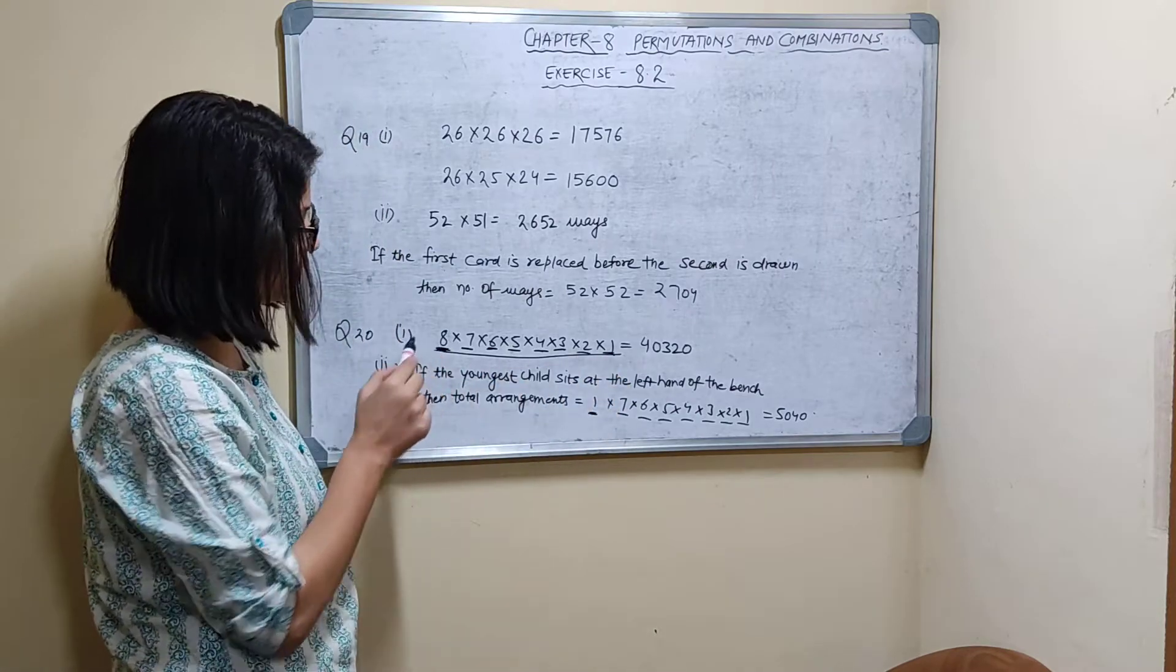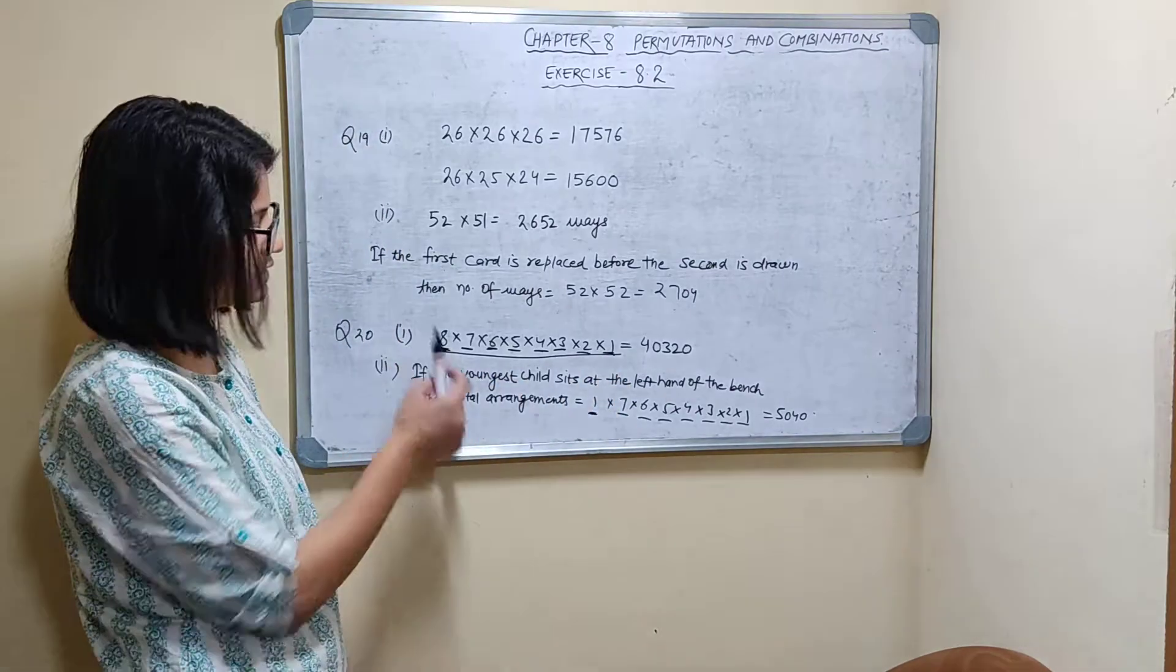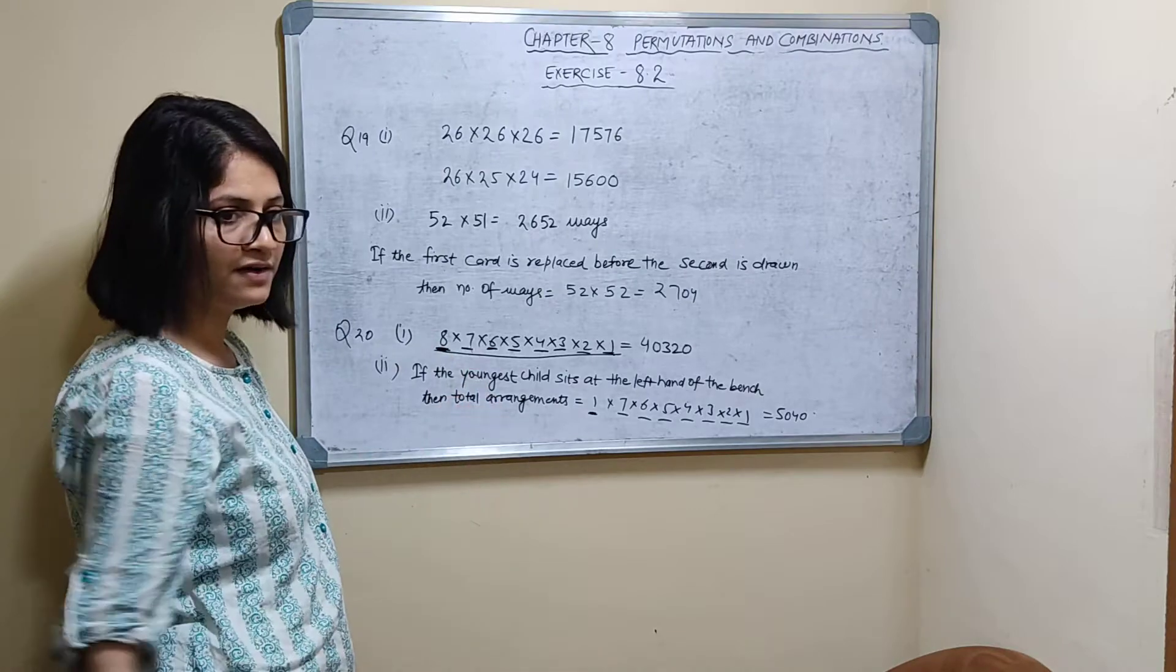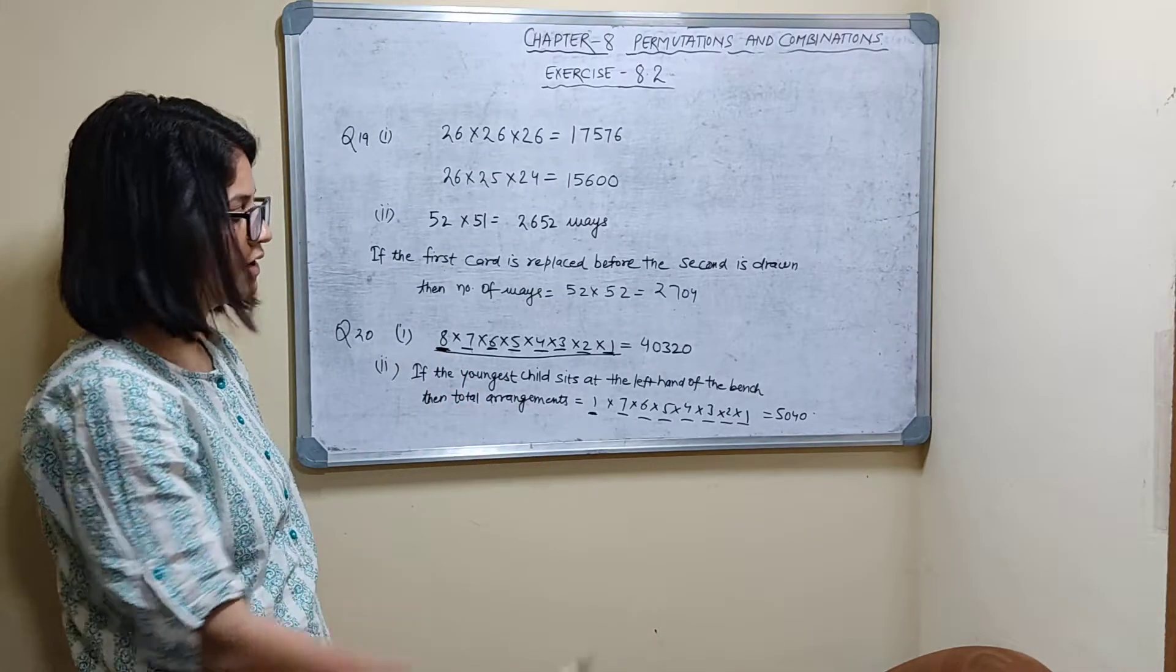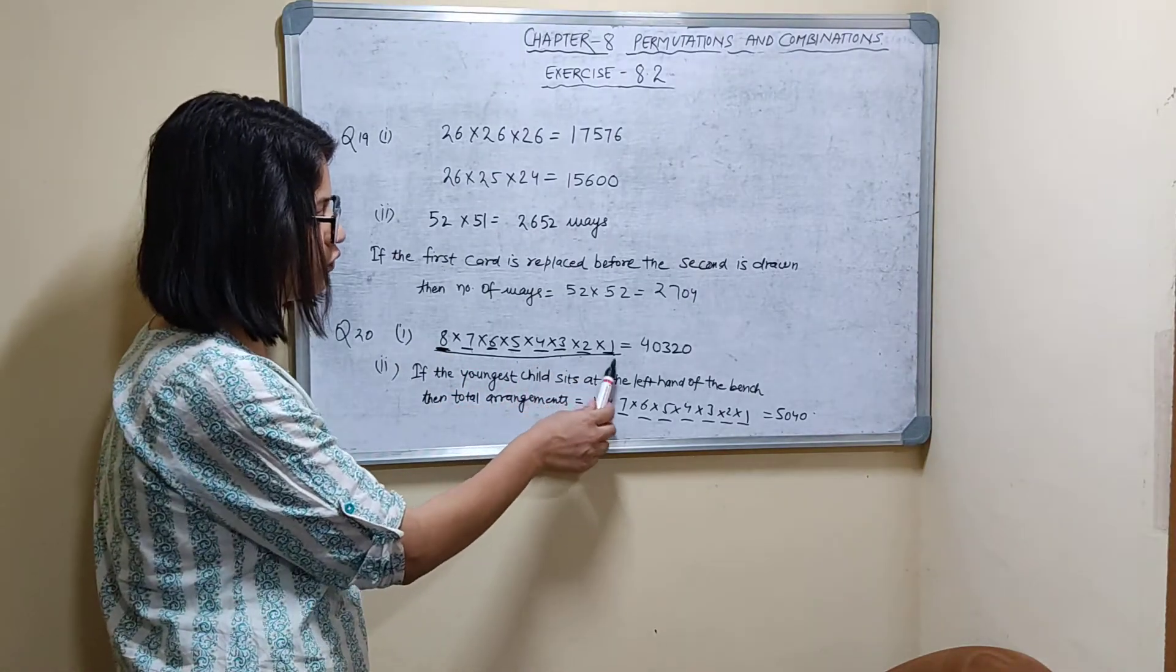It is a bench. First, eight choices are there on the first seat. Eight choices are there. Second, seven choices are there. Six, five, four, three, two, one. Eight seats.